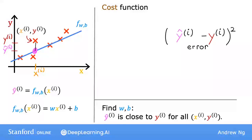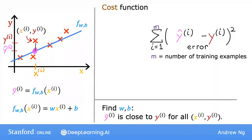Finally, we want to measure the error across the entire training set. In particular, let's sum up the squared errors — we'll sum from i equals 1 all the way up to m, where m is the number of training examples, which is 47 for this data set. Notice that if we have more training examples, m is larger and your cost function will calculate a bigger number. So to build a cost function that doesn't automatically get bigger as the training set size gets larger, by convention we will compute the average squared error instead of the total squared error, dividing by m.